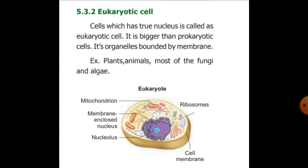A eukaryotic cell is the cell which has a true nucleus. It is bigger than prokaryotic cells. The eukaryotic cell has a membrane-enclosed nucleus. It contains a nucleus, ribosomes, and a cell membrane.